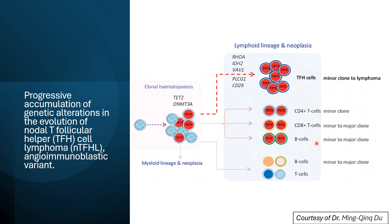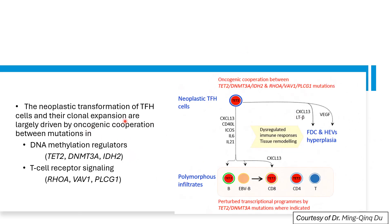In addition to the malignant TFH clone, there are frequently variable, minor, and occasionally predominant T and B cell clones in the lymph node. These minor clones may also harbor TET2 and DNMT3A mutations. TET2 is most commonly seen in angio-immunoblastic T cell lymphoma.